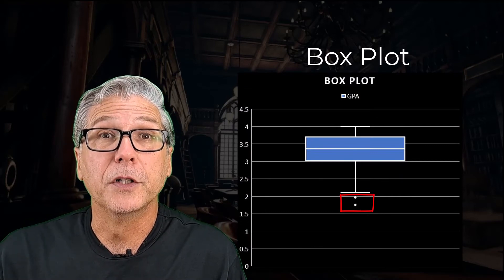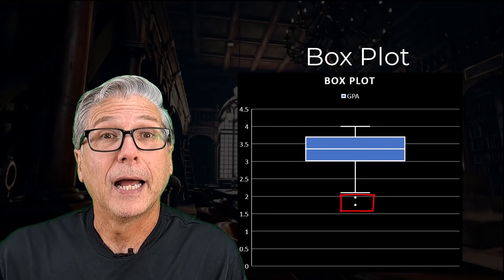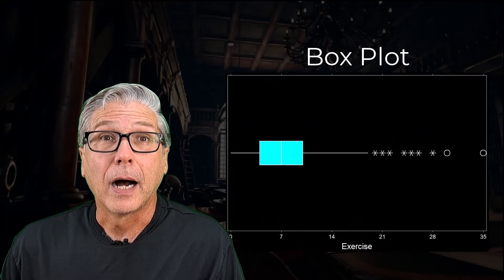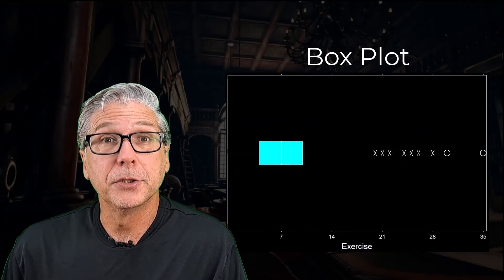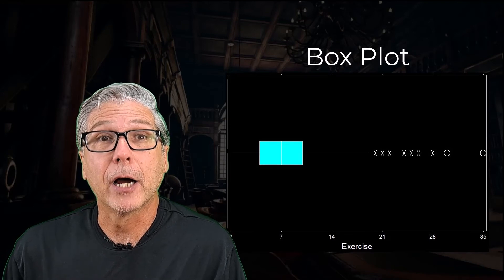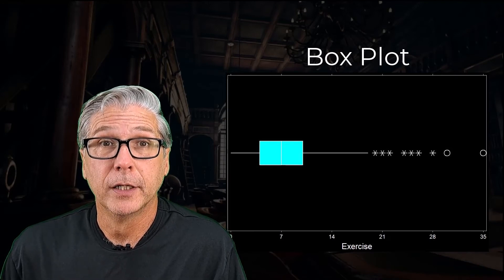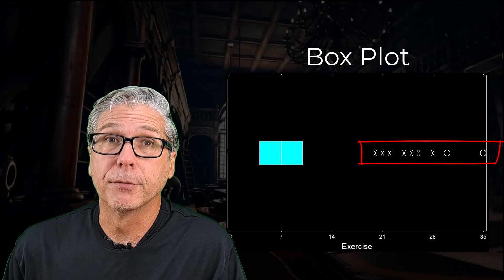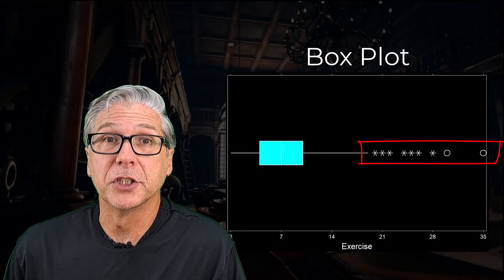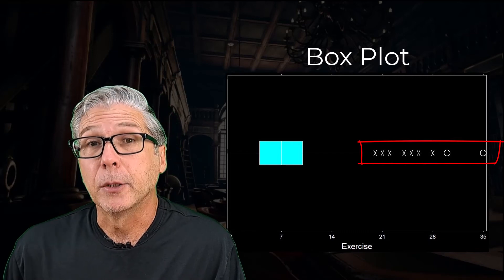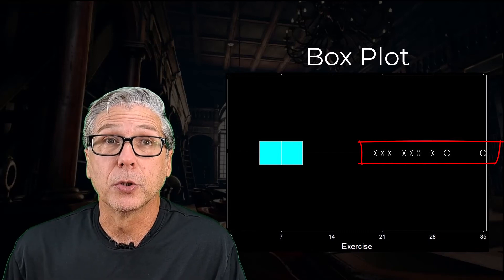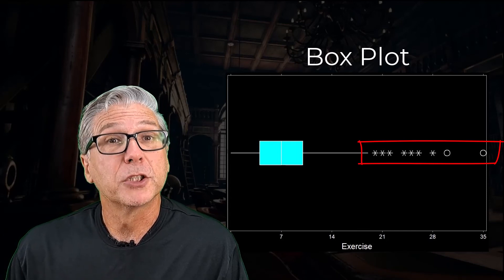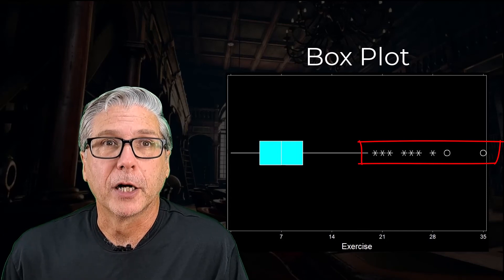Later on we're going to call these values outliers. As an example, I asked the 248 students how many hours they exercise per week. We can see that the box plot reveals that many of the responses were considered extreme. We're going to take a closer look at the outliers and how we detect them later, but it's worth mentioning the box plot here.